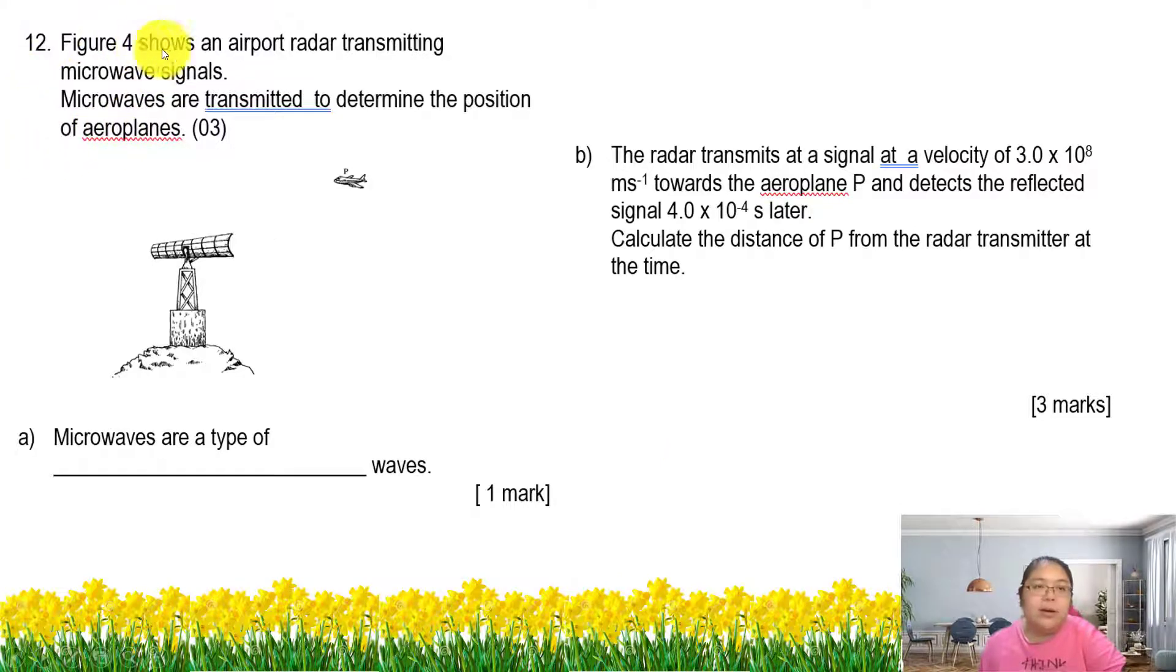Question 12. For the airport, the radar transmits microwave signals. Microwaves are transmitted to determine the position of the airplane. First one, microwave is what type of wave? You can say it's an electromagnetic wave or transverse wave. Now we need to do the calculation. Radar transmitted at a signal of velocity, speed of light, towards airplane P, then detects the reflected signal. This one is time taken. I want to make sure this time is two-way. You send the signal, then you receive, then you measure the time.